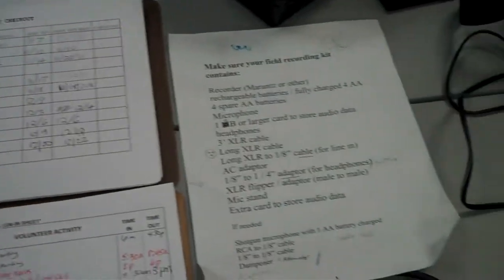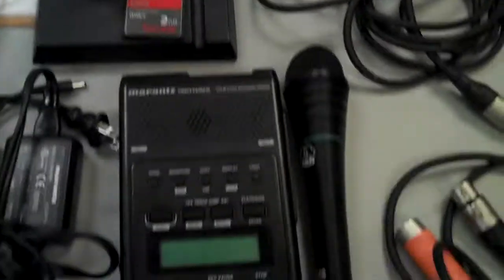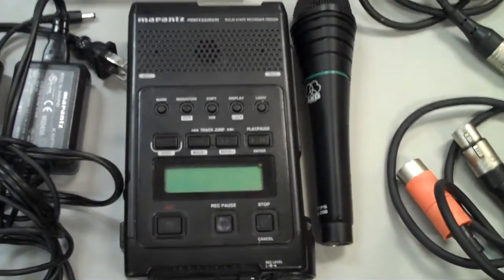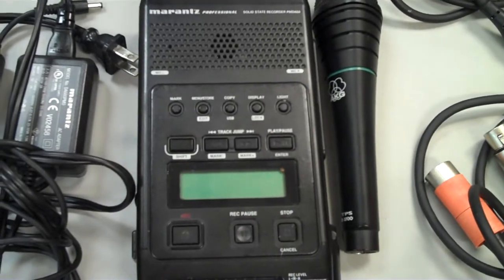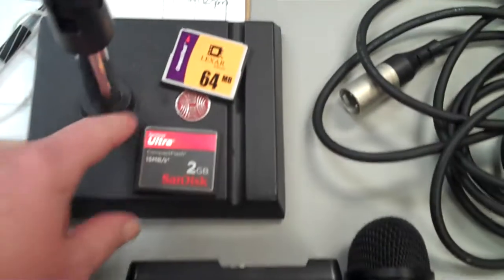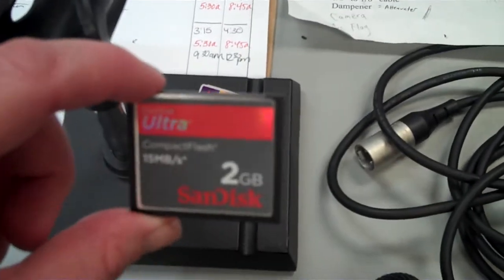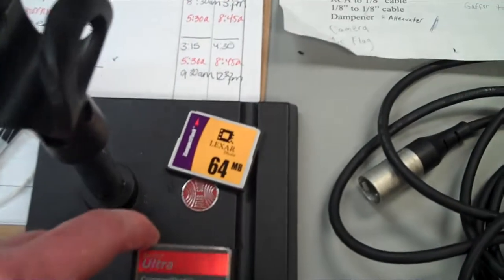In each kit you should have a Marantz recorder, which is this, at least one gigabyte memory card, and a spare memory card.